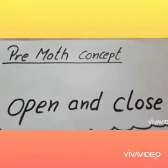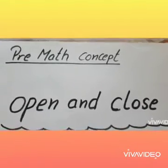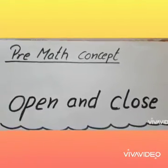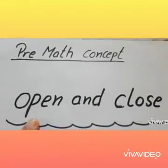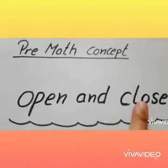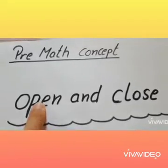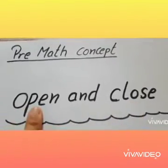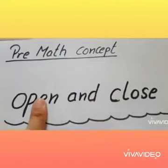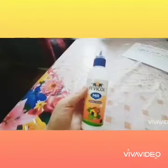Hello children, how are you all? I hope you all are fine. Today we will do the concept of open and close. Open means 'khula hua' and close means 'band'. Open, close. Here I have a fabric gold bottle — open, close.